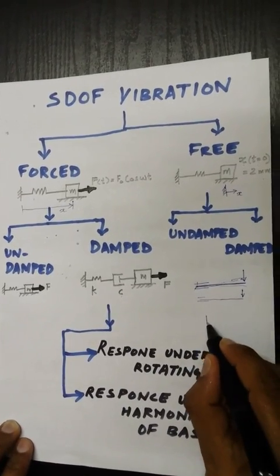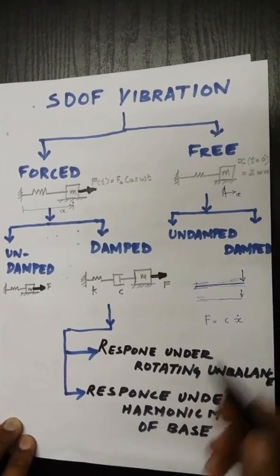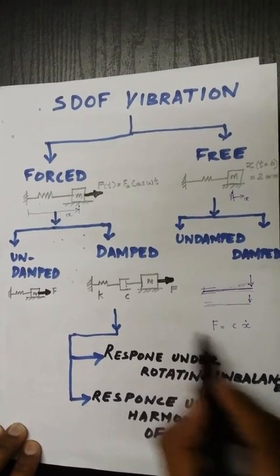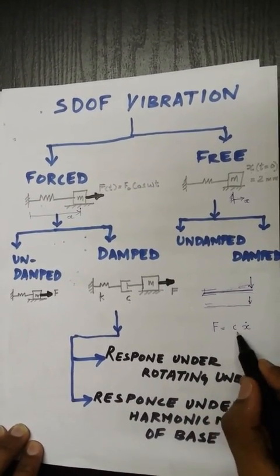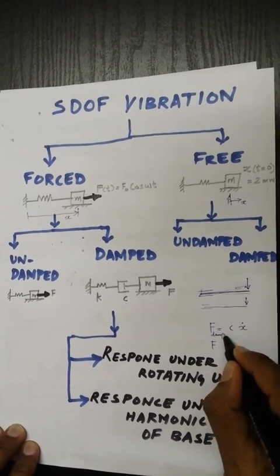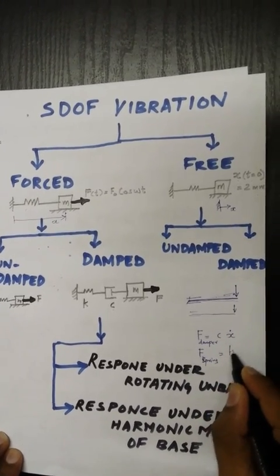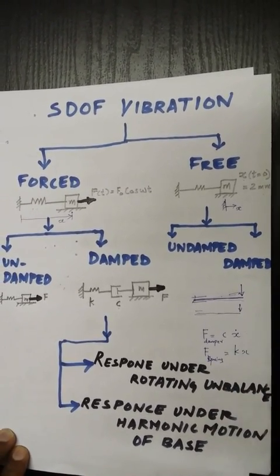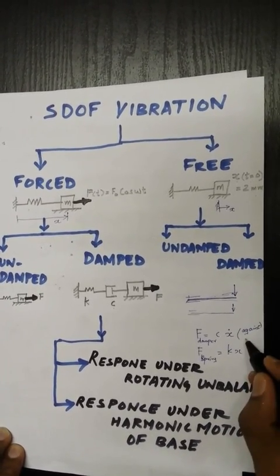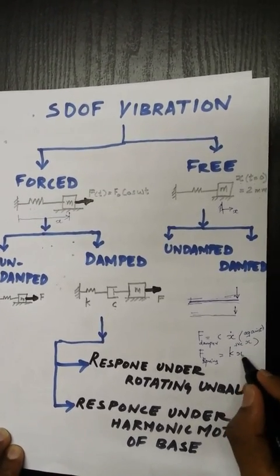There is this famous equation: f is equal to c into x dot. This is the force that will be acting against the motion due to the damper. Similarly, this will be due to the spring, very simple: k into x. Because force is a vector, you have to specify the direction. This will be acting against the positive direction of x because it will be resisting the motion. Similarly, spring force will be acting against the positive x axis.